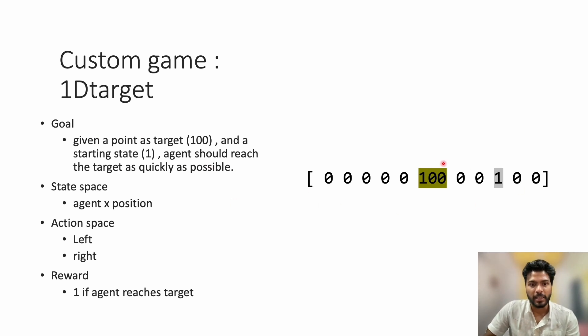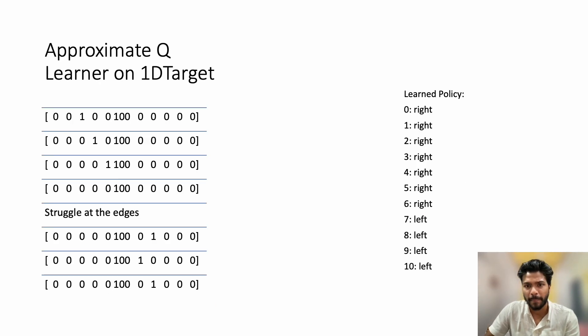The game's goal is, given a target shown as the point with the number 100 and a starting state of the agent at position 1, the agent should reach the target as quickly as possible. The state space is the agent's possible x-positions. The agent can take either left or right. When the agent reaches the target, it gets a reward of 1.